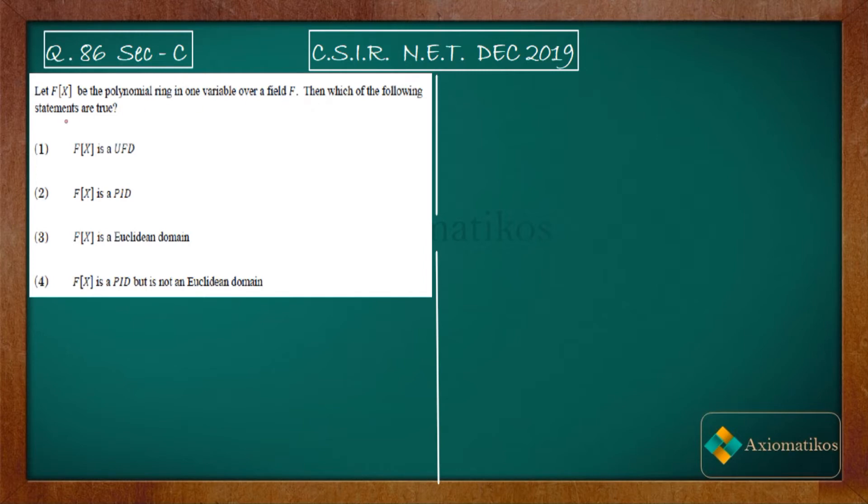Then which of the following statements are true? These are your statements: f(x) is a unique factorization domain, f(x) is a principal ideal domain, and so on. First, we need a few results, so let me write those results, and after that we will solve this problem.